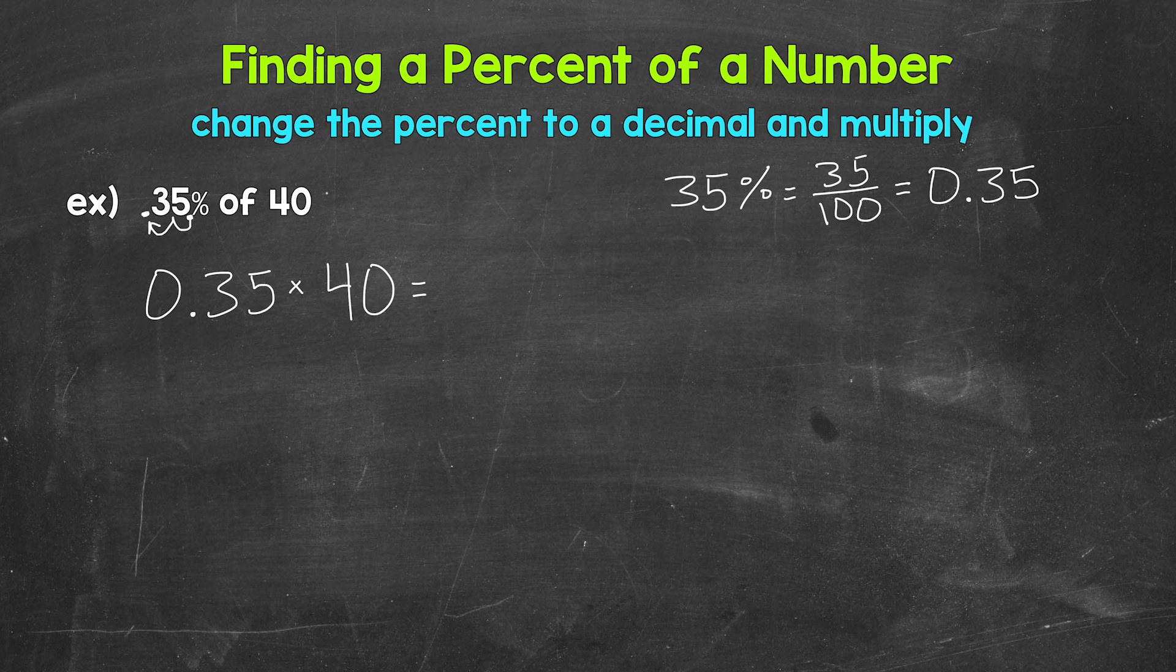And remember, when we multiply decimals, we can take out any decimals, multiply, and then place the decimal in our answer. So let's take out the decimal and do 35 times 40. But I like putting the larger number on top when multiplying. So let's put 40 on top and do 40 times 35.